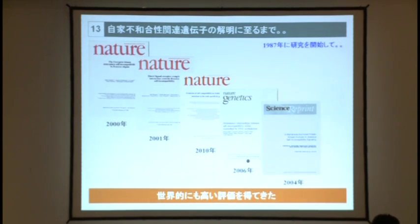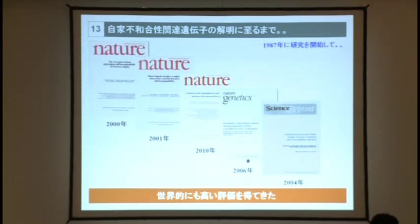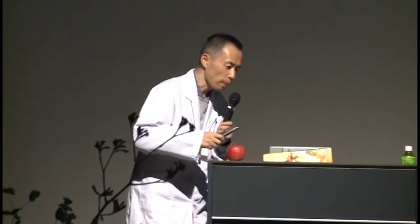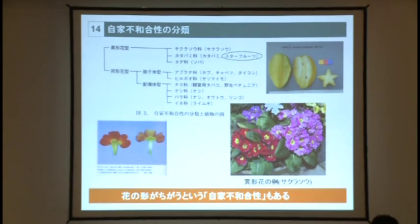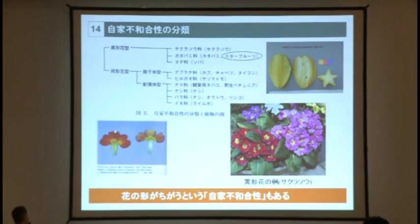なぜネイチャーとかサイエンスとかということを宣伝するかというと、ネイチャーというのはイギリスの雑誌ですし、サイエンスというのはアメリカの雑誌なんですが、世界で一番最初にその現象を見つけて非常に面白いものだというふうに取り上げられた場合に、乗ることができます。研究者にとっては非常に高い評価を受けるということになります。87年に研究を始めて最初に乗ったのは2000年で、6回ほどネイチャーとかサイエンスというものに乗りました。自家不和合成という現象は、皆さんの周りに非常にたくさんあります。桜草という、冬から春にかけてこういうふうに赤い花が咲いたり、紫もありますし、